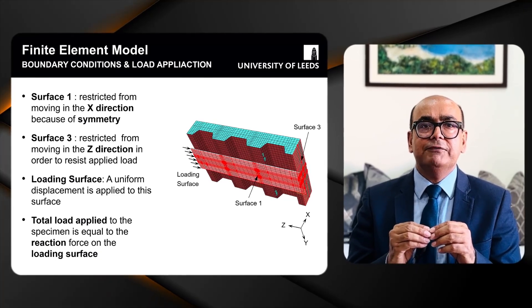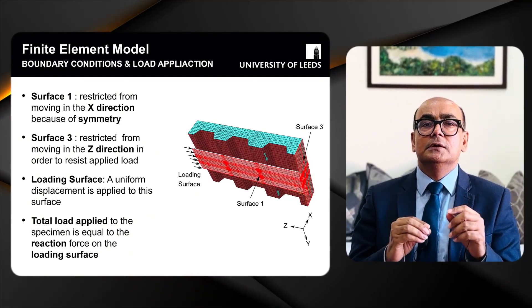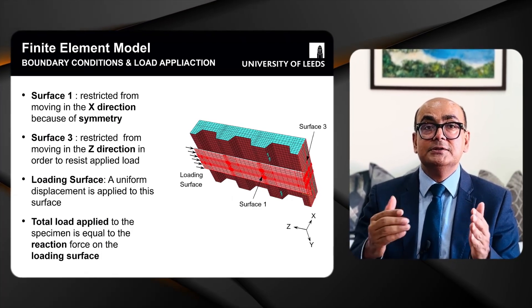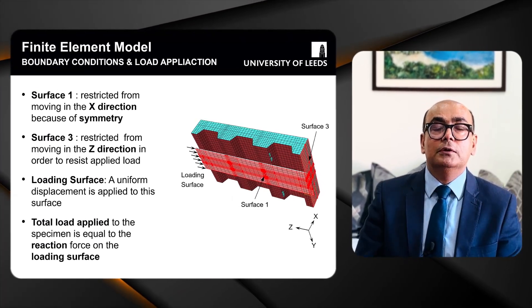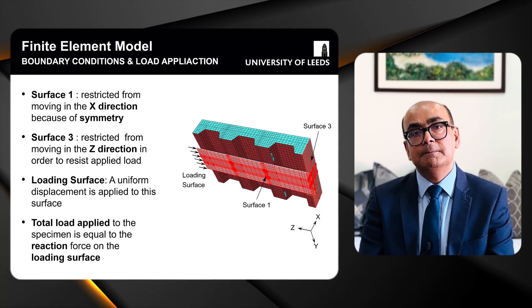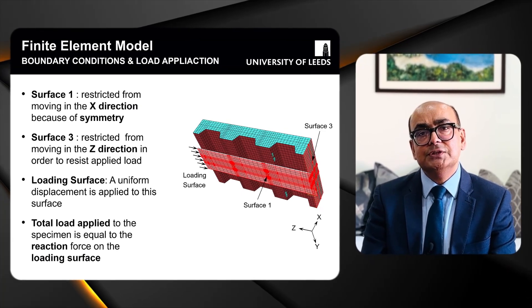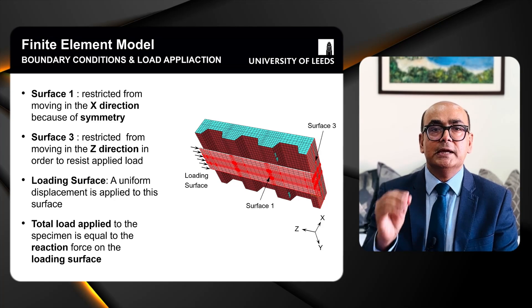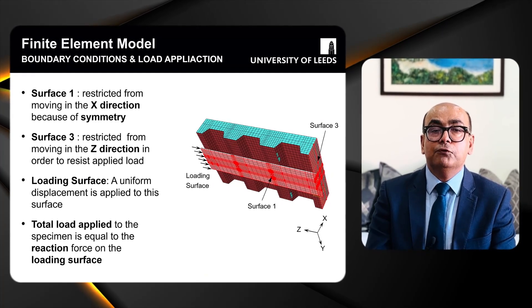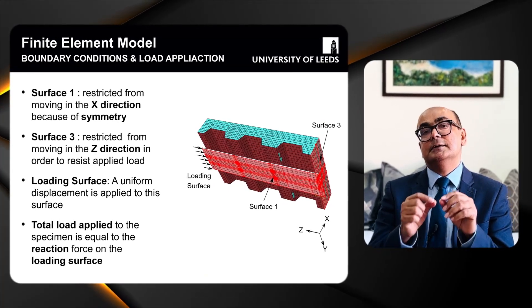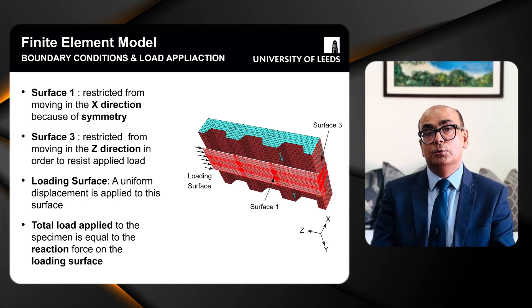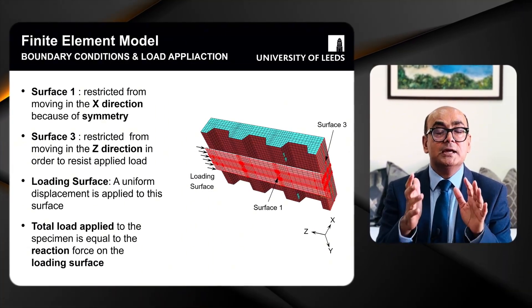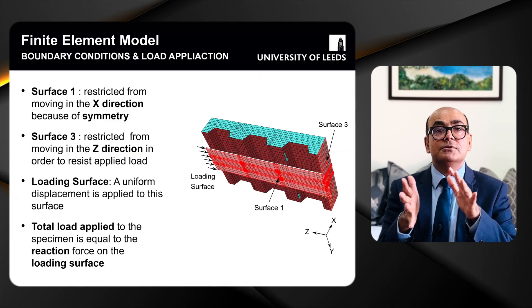This slide shows boundary conditions and load applications. Surface one is restricted from moving in the X direction due to symmetry — I assumed symmetry on the bottom flange of the beam. Surface three is prevented from moving in the Z direction. A uniform displacement is applied on the loading surface, and the total load applied is measured as the reaction on that loading surface.